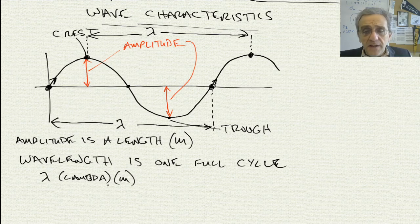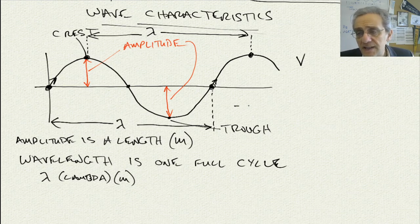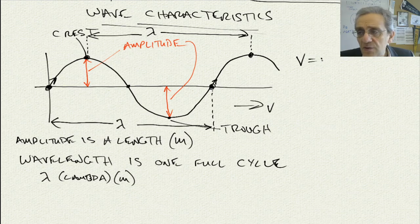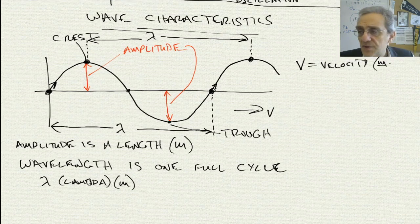So what else do we know about this wave? Well, the other thing that we know about the wave is that it has a velocity. It's traveling. In this case, I have to pick a direction. So I'll say that it's traveling in this direction. And so V will stand for velocity. And we've studied this before. We know that velocity is in meters per second.